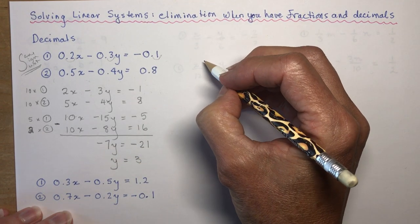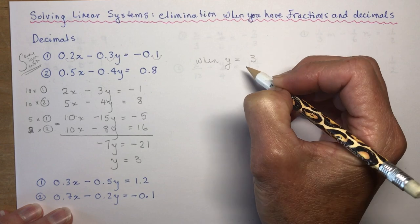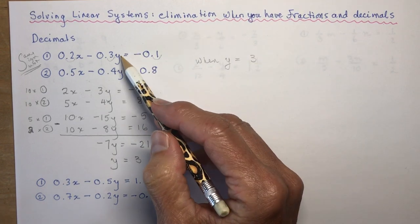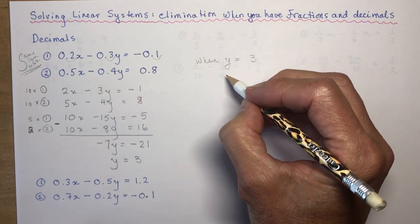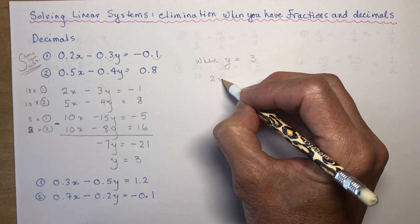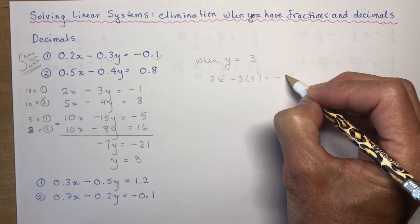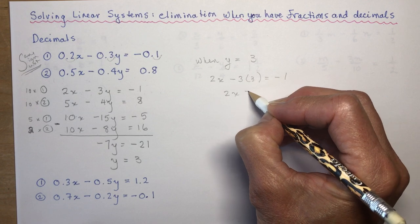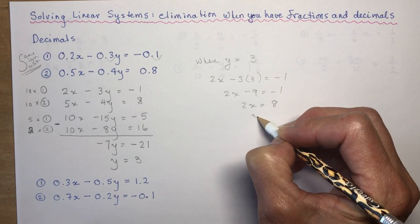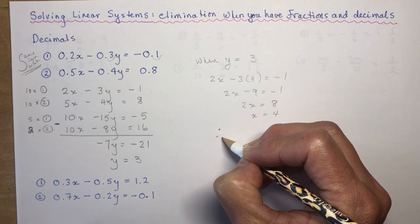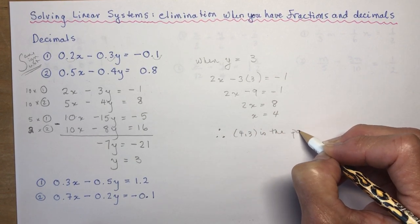Dividing by minus 7 gives y equals 3. Now I plug y equals 3 into one of the equations — I'm not going back to decimal form. Using equation 1: 2x minus 3 times 3 equals minus 1, so 2x minus 9 equals minus 1, then 2x equals 8, and x equals 4. Therefore the point of intersection is (4, 3).